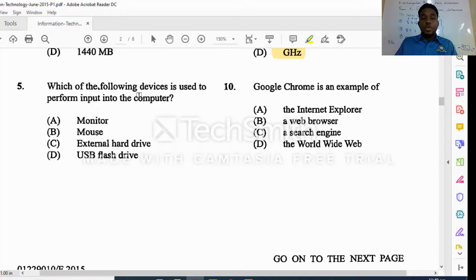Which of the following devices is used to perform input into the computer. We know that the monitor displays output, our external hard drive is used for storage, and our flash drive is used for storage. Our mouse will allow the user to click, so it will present input into the computer, so we could see mouse.